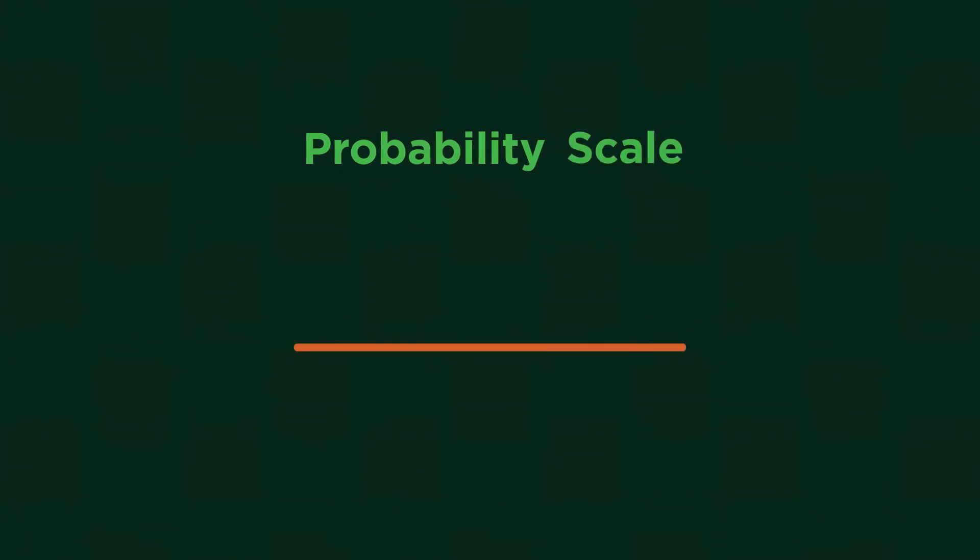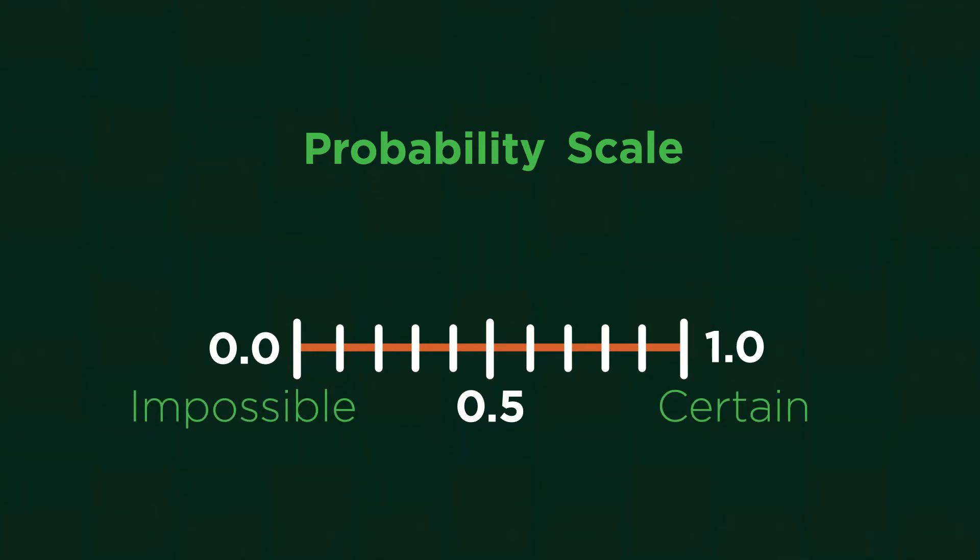We use a probability scale to know more precisely when an event occurs. If we label zero as impossible and one as certain, we can place events on a scale like this. Between zero and one, an event can be placed anywhere on the scale with a 50% chance in the middle.